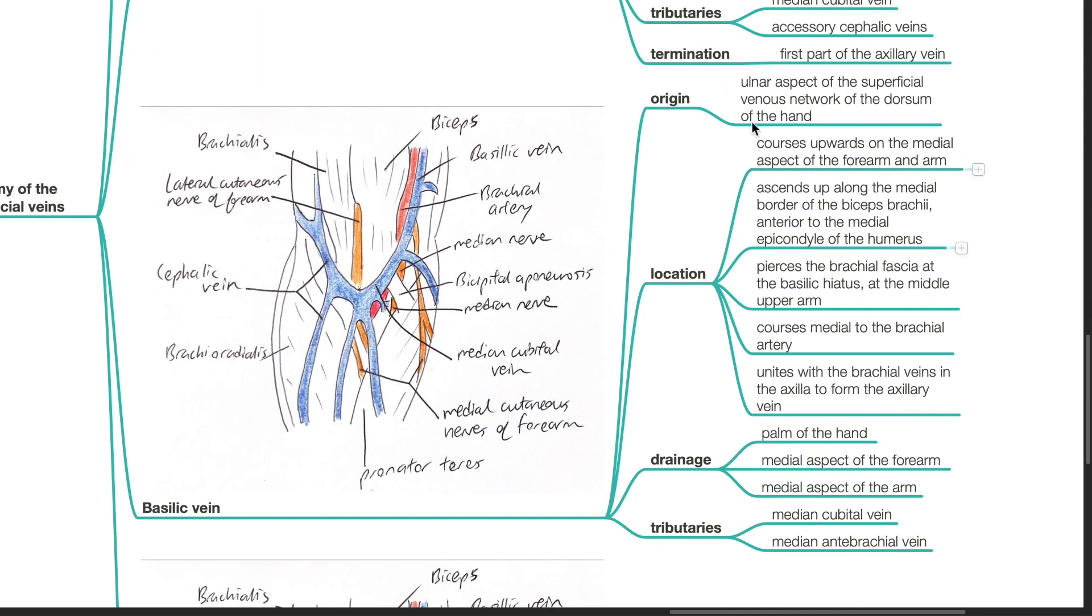It originates from the ulnar aspect of the superficial venous network of the dorsum of the hand. It courses upwards on the medial aspect of the forearm and the arm. It ascends up along the medial border of the biceps brachii, anterior to the medial epicondyle of the humerus. It pierces the brachial fascia at the basilic hiatus at the middle of the upper arm.